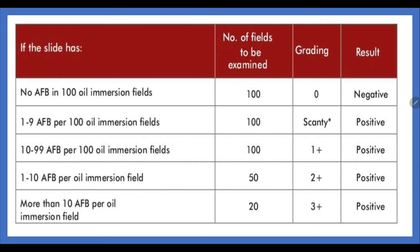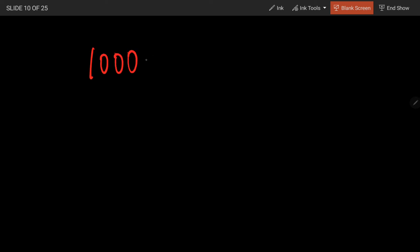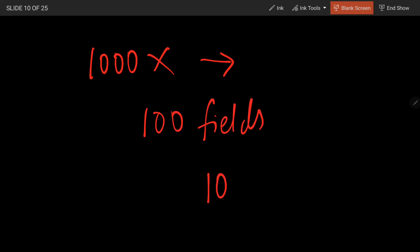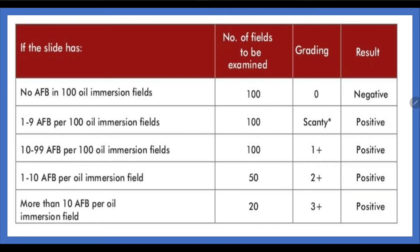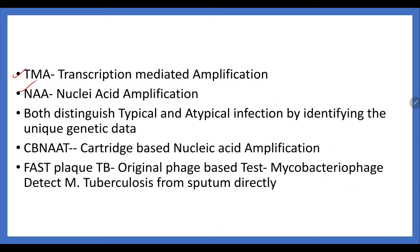For AFB grading, we use 1000x oil immersion and view 100 fields. The grading goes: no AFB in 100 fields = 0; 1–9 AFB in 100 fields = scanty; when it reaches 10–99 AFB per 100 fields = 1+; per oil immersion field 1–10 = 2+; more than 10 per oil immersion field = 3+. TMA and NAA are used for distinguishing between typical and atypical mycobacterial infection.